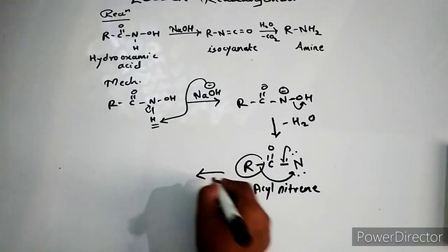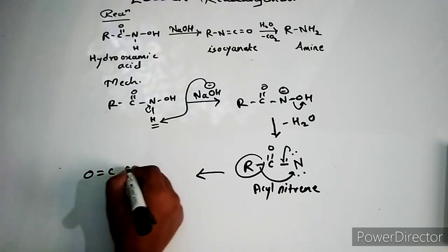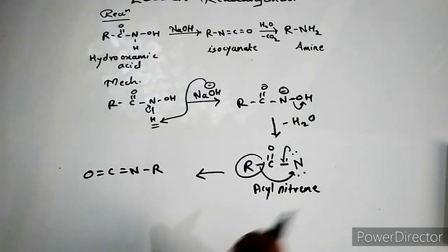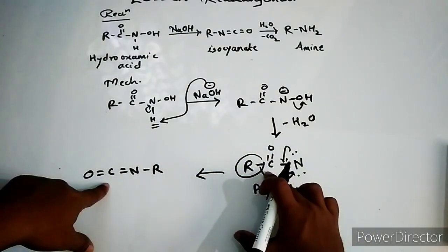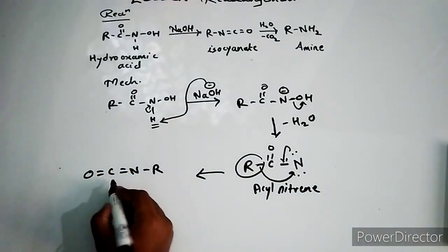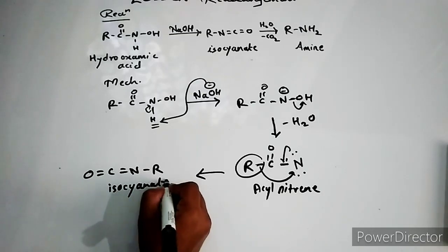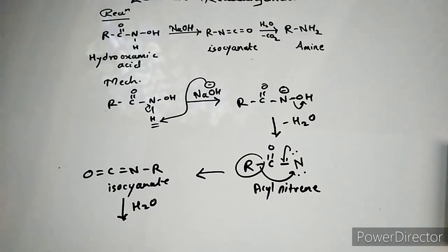And now what you are getting is C=O double bond, C=N, and alkyl group is going to be shifted. So this is what alkyl isocyanate we are with, and this alkyl isocyanate on hydrolysis is going to give you a primary amine with the formation of carbamic acid.